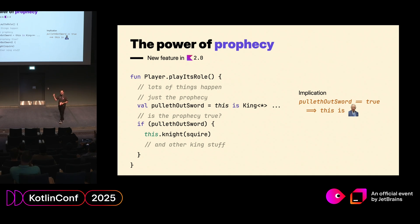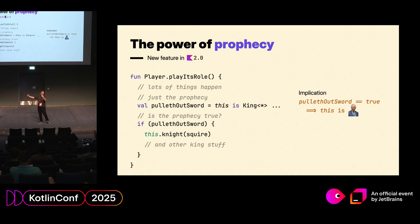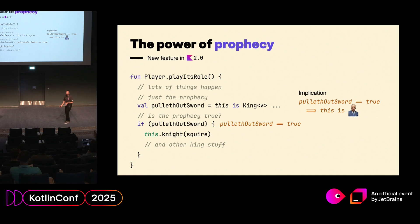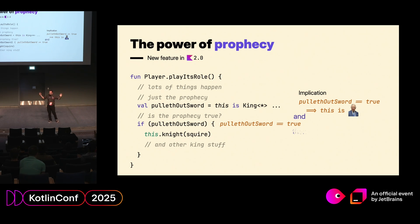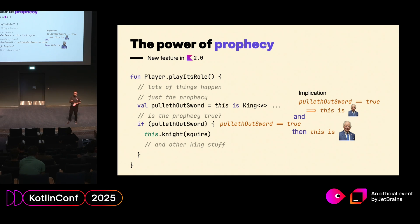What it records is: if the 'pullOutSword' variable is true, then it is the case that the player is the king. That's because that's literally what is written there — 'pullOutSword' is equal to 'isKing'. And because we have an 'and', we don't have the implication in the other way, but all we care is this one. When we get to the point where we check if this is true, we get a second piece of data — we know that if we are inside this block, the 'pullOutSword' variable must be true. We have the power of logic: A implies B, A is true, B is true. That's how the compiler is able to put this together.